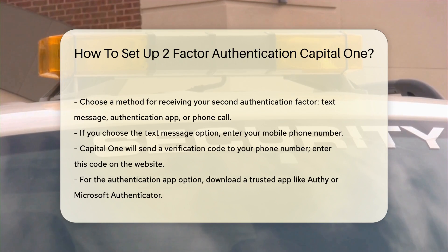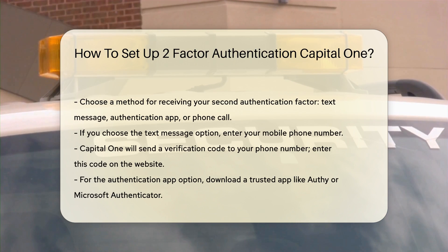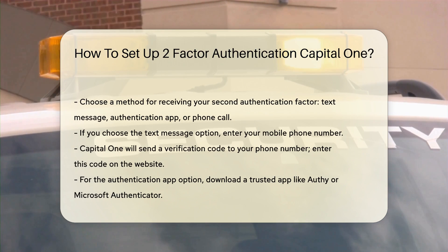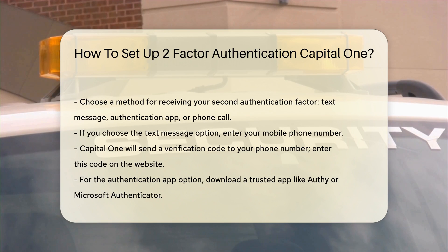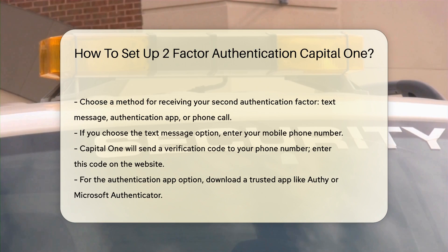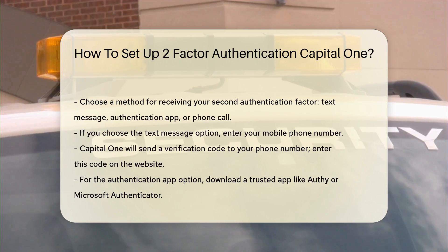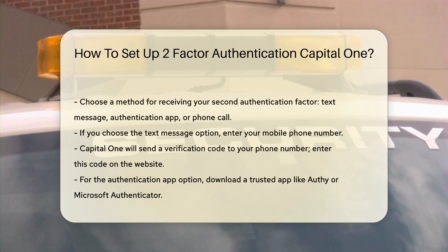Click on the 2FA Setup link to begin the process. You will be prompted to choose a method for receiving your second authentication factor. Common options include receiving a text message, using an authentication app, or receiving a phone call.